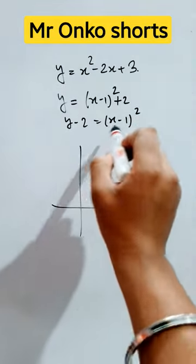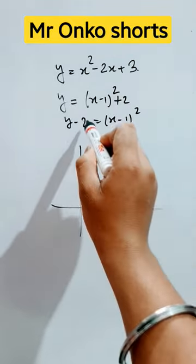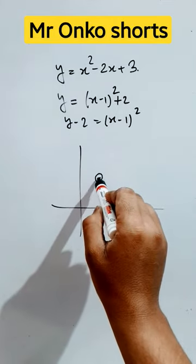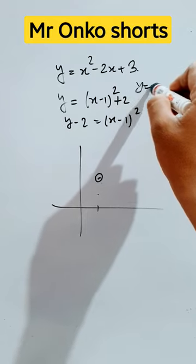So the vertex of this parabola will be (1, 2), and if it touches the y-axis, then the point will be x = 0, that is y = 3.